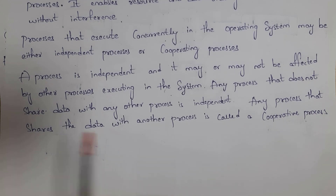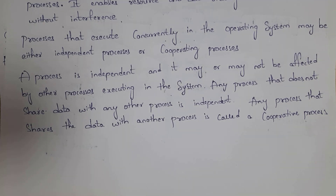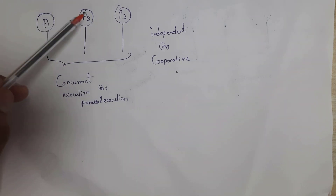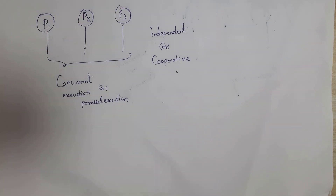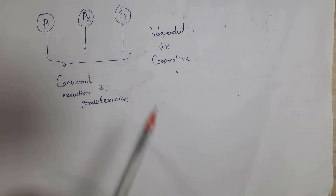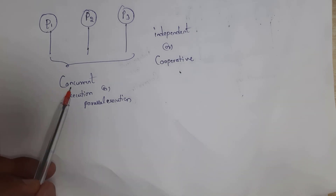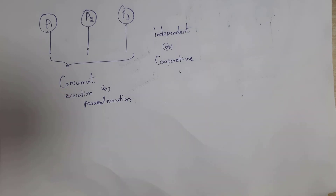Any process that shares data with another process is called a cooperative process. Here, process P1 is sharing data with P2 and P3, P2 is sharing data with P1 and P3, and P3 is sharing data with P1 and P2. Processes which execute concurrently can be either independent processes or cooperative processes.